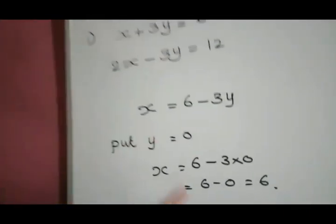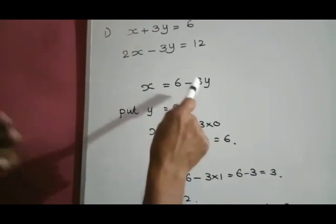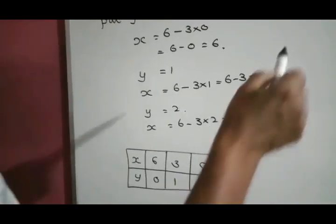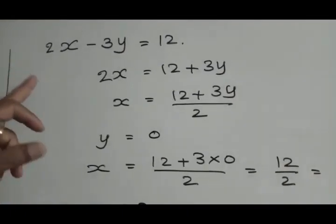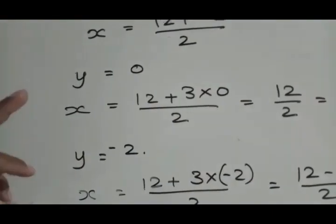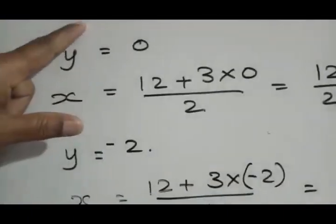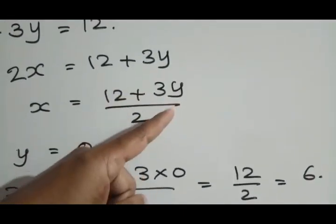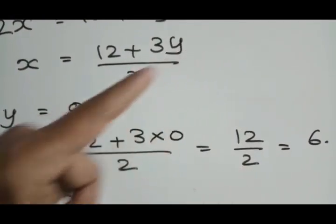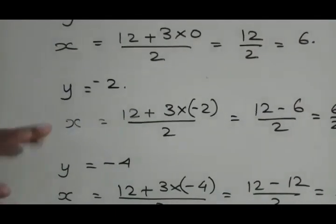We have taken positive values because when x equals 6 minus 3y, the difference comes to a smaller number, which is convenient to represent on a graph sheet. Similarly, for the second equation, we express x in terms of y. Here we have mostly taken negative values of y because the expression contains 12 plus 3y — taking a positive value would give a larger x, so smaller values are more convenient to plot.